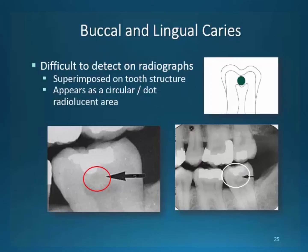Buccal and lingual caries are similar to occlusal caries when comparing location and appearance. They tend to have a more circular centered appearance. As with occlusal decay, they are difficult to detect and can only be done so with a very trained eye and quite a bit of experience. Note that these little lesions may appear more rounded and slightly below the occlusal surface, and we know that it is not related to the existing filling because it has almost established itself in its own area.